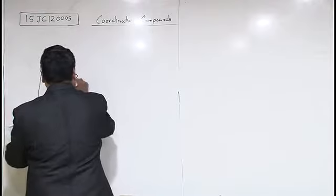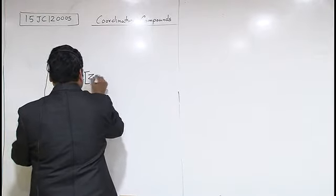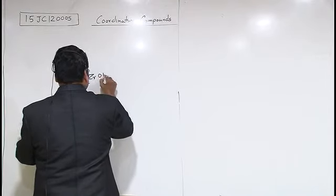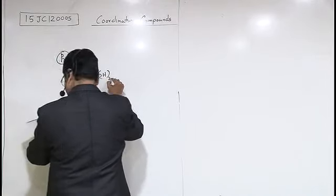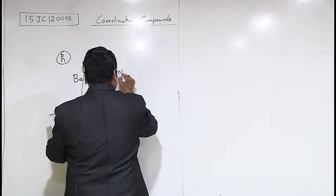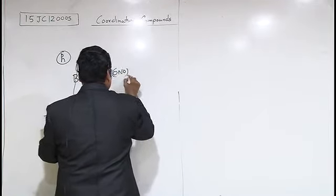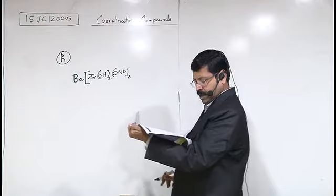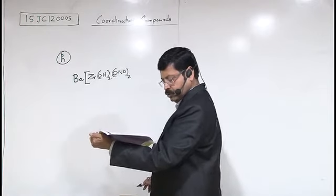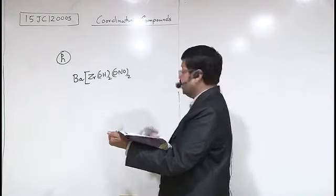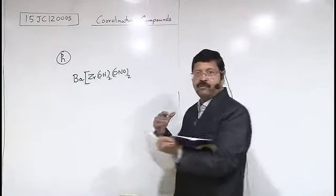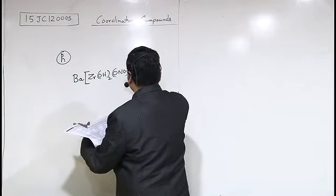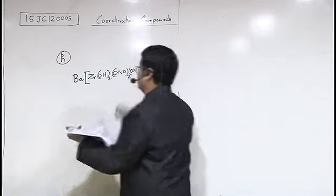So here one barium is needed, and this is zirconate in the negative coordination sphere. And the name is hydroxido 2, nitrito with O as the donor atom in the ambident ligand, and oxalato C2O4 2 minus, which can be abbreviated as ox. This is the answer.